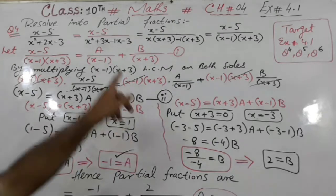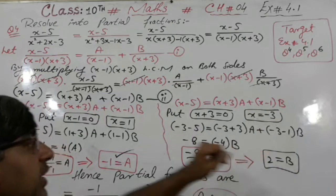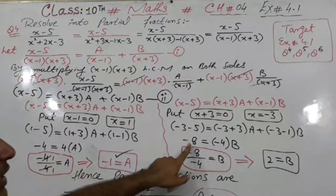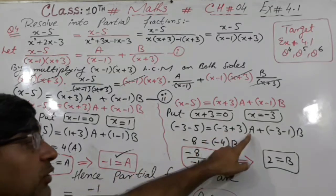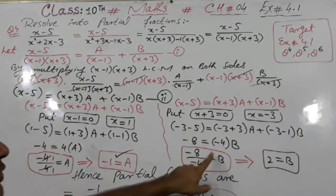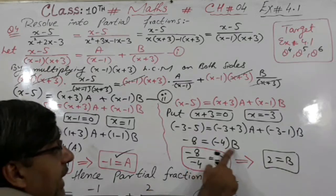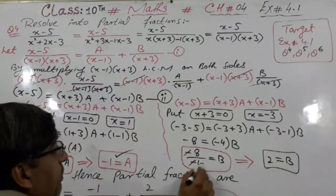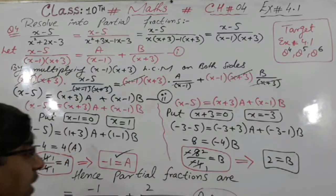Now similarly the second bracket we have is x plus 3. Putting x plus 3 equal to 0 gives x equals minus 3. Wherever x appears, we put minus 3 — using the calculator this gives minus 8. The A term becomes 0, so it cancels. Minus 3 minus 1 gives minus 4 into B. The negative signs cancel, 4 divided by 4 divided by 2 gives 2, so the value of B is 2.